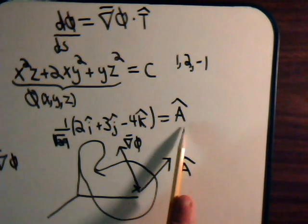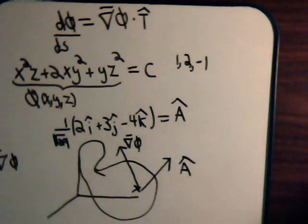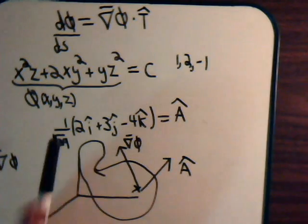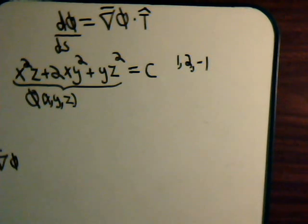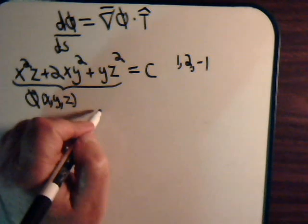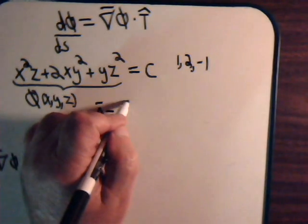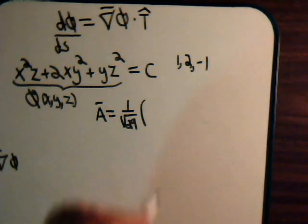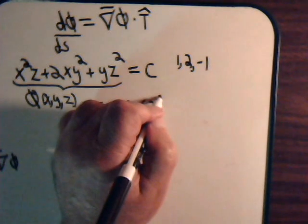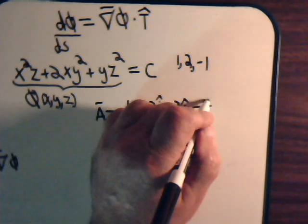So we have unit vector A. Now we have to find the gradient of our scalar. So we have to take some partial derivatives. So let's do that, and let's write this more neatly, so we'll erase all of this. So the unit vector A had this expression: 1 over the square root of 29 times 2i plus 3j minus 4k.